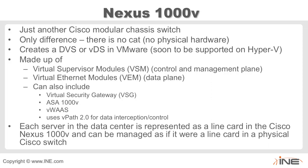Each server in the data center is represented as basically a line card in the Cisco Nexus 1000V, and it can be managed as if it were a line card in a physical Cisco switch. We're going to take a look at some diagrams, and this should begin to coalesce and make a lot more sense when you see these visually.